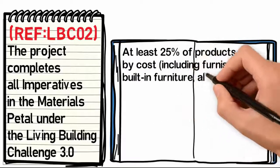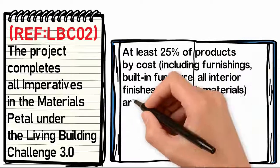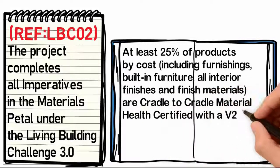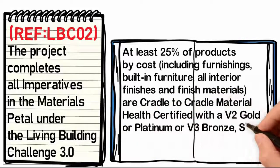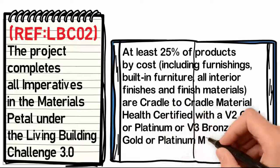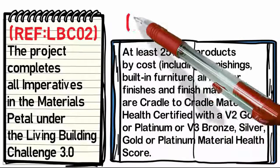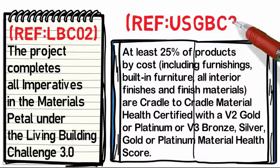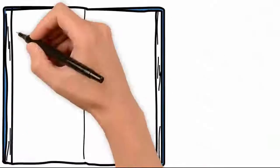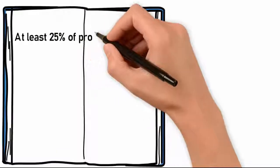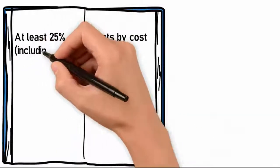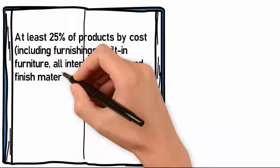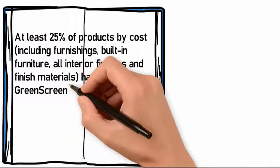All interior finishes and finish materials are Cradle to Cradle Material Health certified with a v2 Gold or Platinum, or v3 Bronze, Silver, Gold, or Platinum material health score (Reference: USGBC37). At least 25% of products by cost, including furnishings, built-in furniture, all interior finishes and finish materials, have no GreenScreen Benchmark 1, List Translator 1, or List Translator Possible 1 substances.